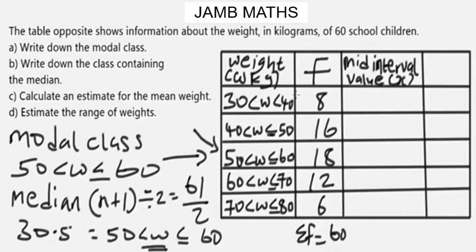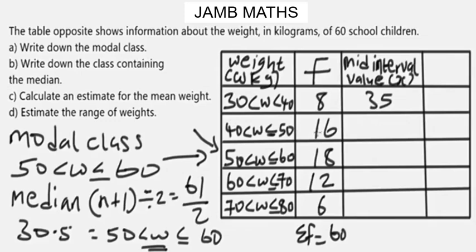To get the mid-interval value x, you add together the end values of each class and divide by two. So for the first class (30 to 40): (30 + 40) ÷ 2 = 35. For 40 to 50: (40 + 50) ÷ 2 = 45. For 50 to 60: (50 + 60) ÷ 2 = 55. For 60 to 70: (60 + 70) ÷ 2 = 65. For 70 to 80: (70 + 80) ÷ 2 = 75.